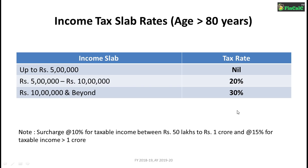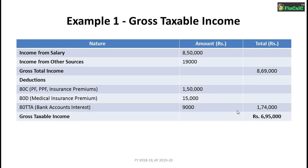There were no changes in slab rates or tax limits. Let's come to Example 1 of our income tax calculation process. Let's say we have income from salary as ₹8,50,000 and income from other sources as ₹19,000, which comes to a total of ₹8,69,000. We have deductions under 80C, 80D, and 80DDA of ₹1,50,000, ₹15,000, and ₹9,000 respectively, totaling ₹1,74,000.